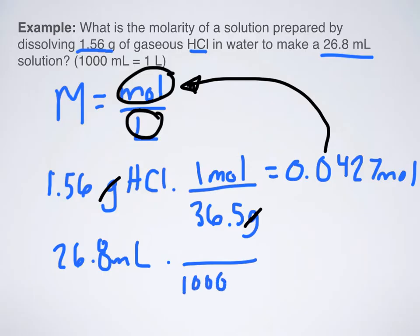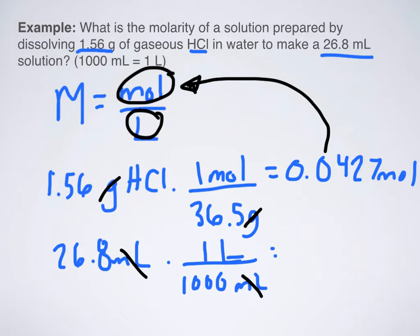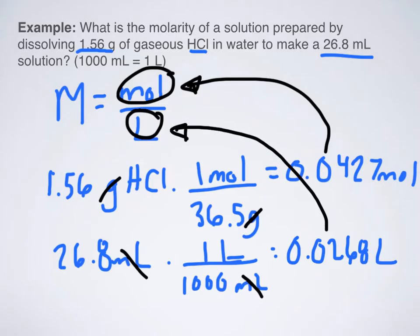Next up, I have 26.8 milliliters. I can't use milliliters. I need to convert that into liters. So what do I do? I divide by 1,000 milliliters because there are 1,000 milliliters in one liter. All right, so when I do that, my milliliters cancel, and I'm left with 0.0268 liters, which is now a unit that I can plug into this part of my molarity equation.